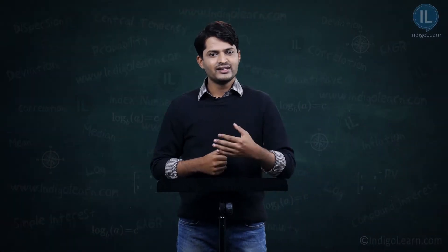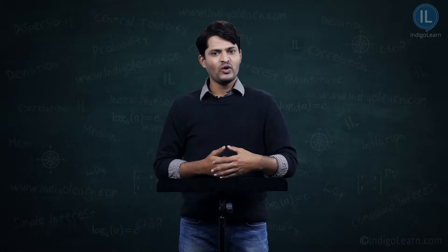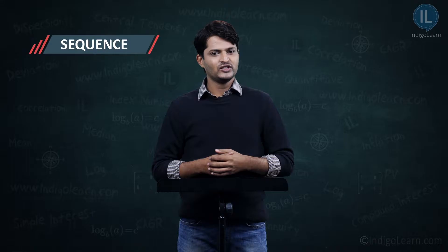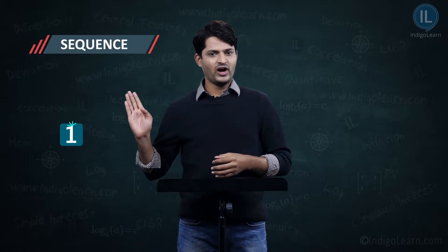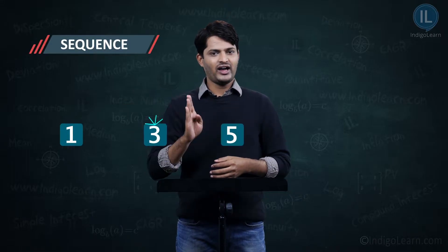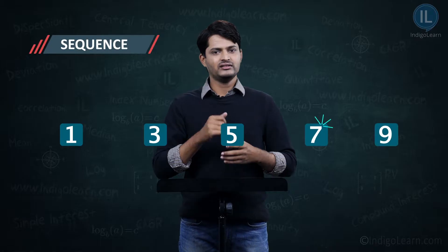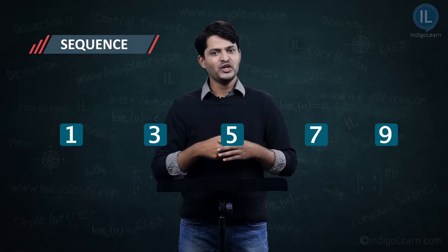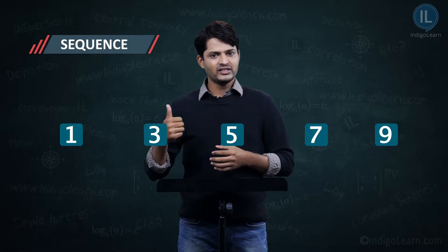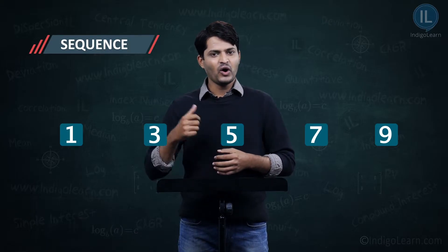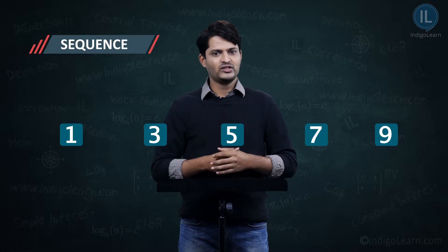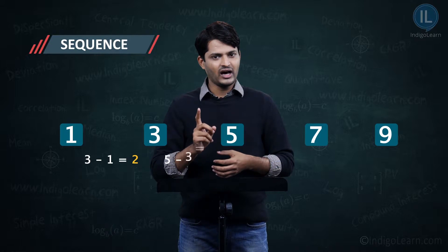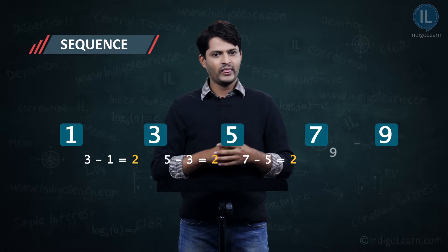Let us look at some patterns of numbers and try to distinguish what we call a sequence and what is not a sequence. Consider the pattern 1, 3, 5, 7, 9. Do you observe any pattern in these numbers? You would notice that these are odd natural numbers, and the difference between each consecutive number is 2.